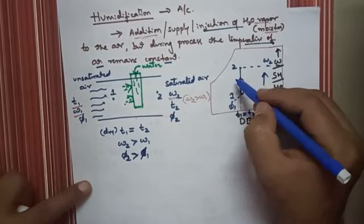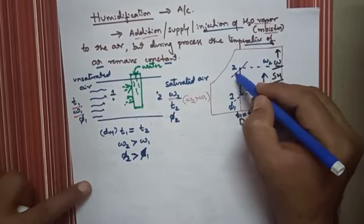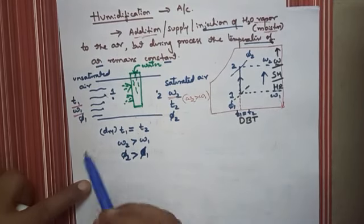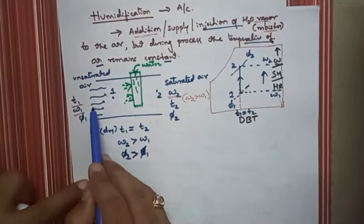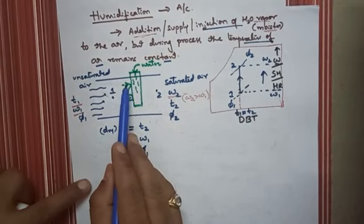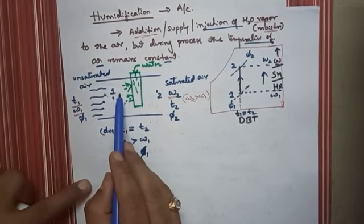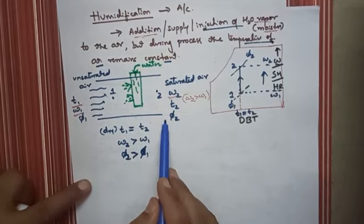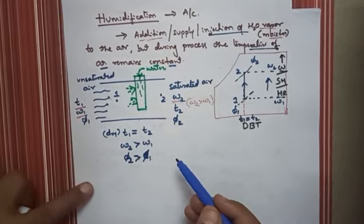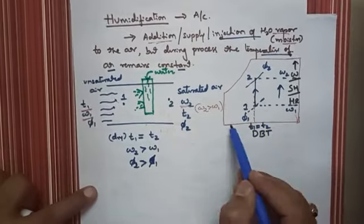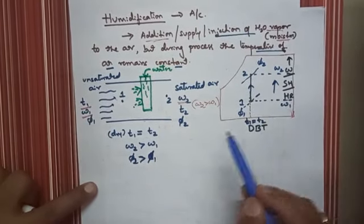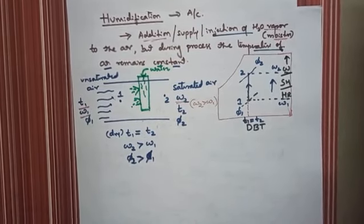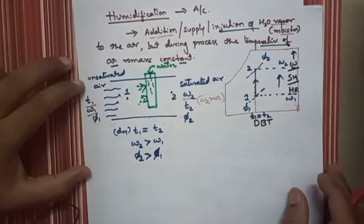Relative humidity also increases — phi 2 is more than phi 1. For example, if phi 1 is 30% relative humidity, by supplying water that mixes with the air, the percentage of water increases, so relative humidity increases to phi 2. This is the concept of humidification and its representation on the psychrometric chart.